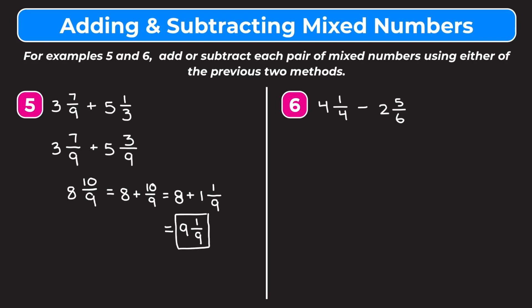Now let's take a look at example 6, and I'll be using the first method where we turn each fraction into an improper fraction first. We're going to look at 4 and 1 fourth. We multiply the denominator by the whole number: 4 times 4 is 16. Add that to our numerator: 16 plus 1 is 17. So we have 17 over 4. Then we do the same thing for 2 and 5 sixths. 6 times 2 is 12, plus our numerator of 5 is 17. So we get 17 sixths.